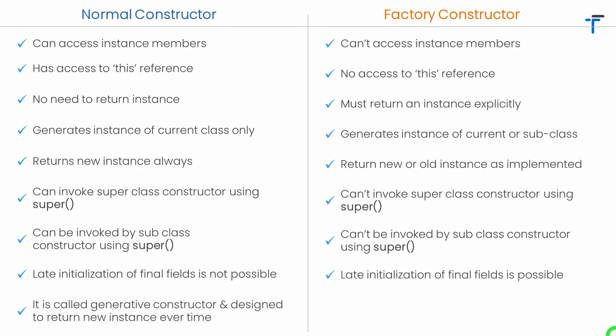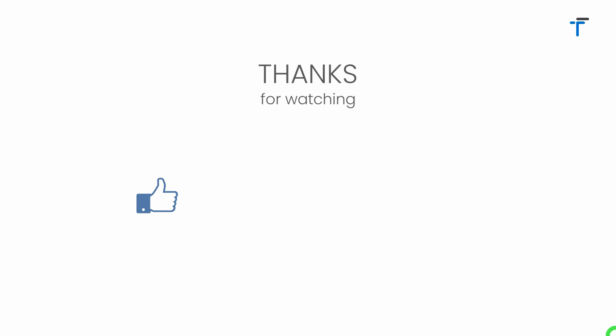The final point: the normal constructor is called the generative constructor and is designed to return a new instance of the class every time it's called. The factory constructor is specially made for implementing design patterns like the factory pattern and the singleton pattern. If you don't know about these patterns, go ahead and watch the video on the factory constructor where I've explained factory patterns, singleton classes, and how to implement them using the factory constructor. If you found this video helpful and understood the differences, don't forget to like, share, subscribe, and hit the bell notification button.